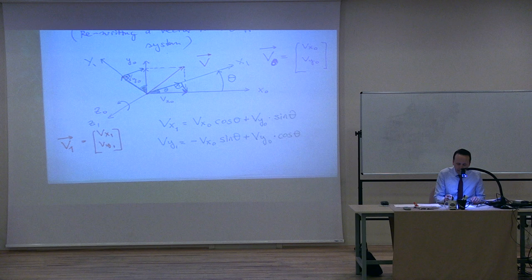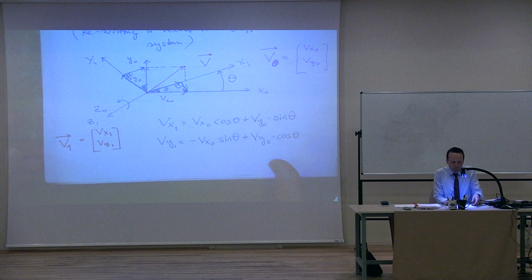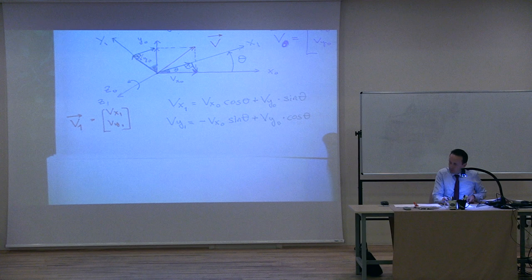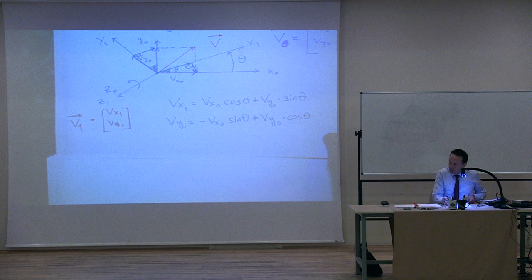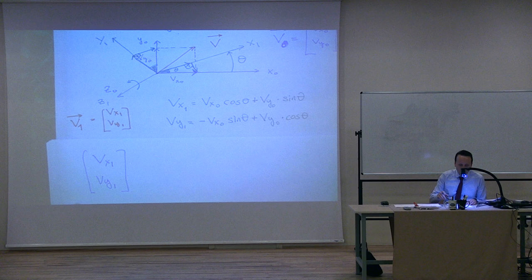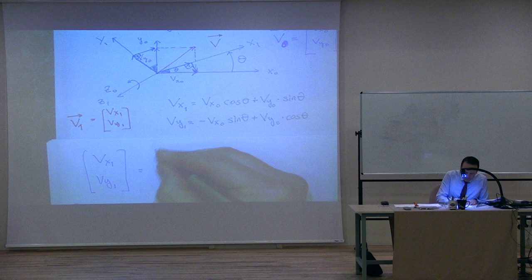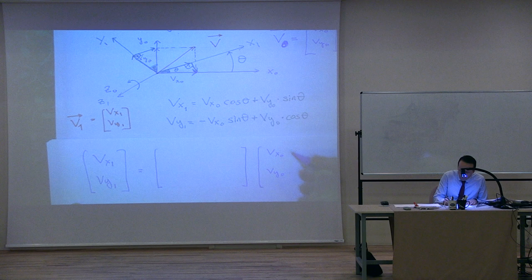Before I go to the other axes — any questions? Do you fully understand what I'm doing? It's actually quite simple, but you have to see where it comes from. If you just look at the matrix, you might think you're transforming a vector into another vector — that's not true. You are just changing the coordinate system.